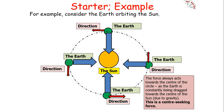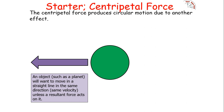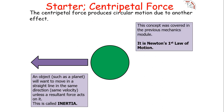The force always acts towards the centre of the circle because the Earth is constantly being dragged towards the common centre of mass of the Earth and the Sun. You might ask why the Earth does not just get pulled in — that is because an object such as a planet wants to move in a straight line at the same velocity unless a resultant force acts on it. That is Newton's first law of motion, and this phenomenon is called inertia. Any object in motion will have inertia if there is no resultant force acting on it.